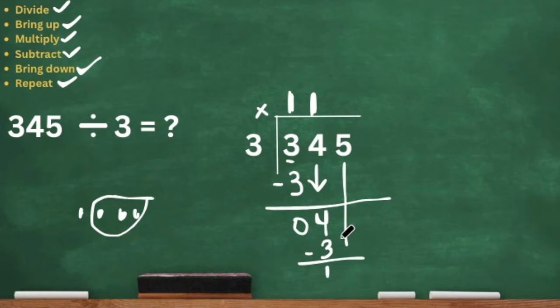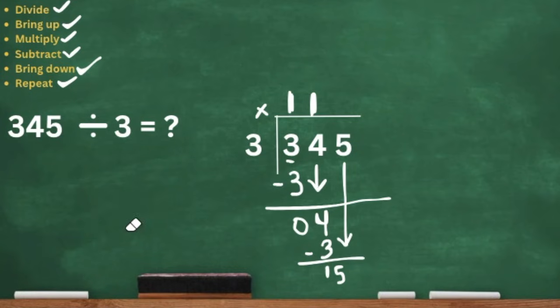Now we have 15. We are going to repeat the process — we're going to do 15 divided by our divisor, which is 3.